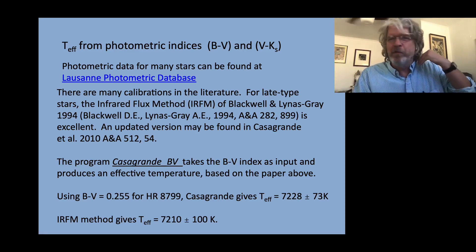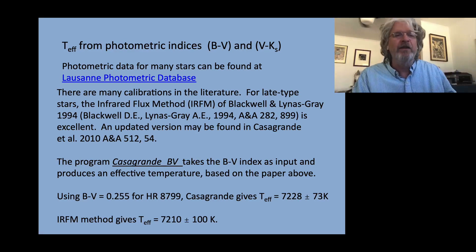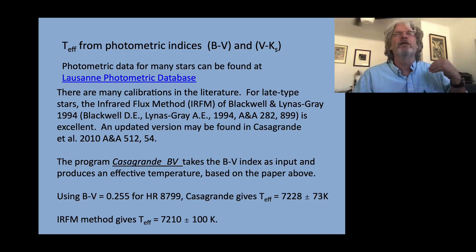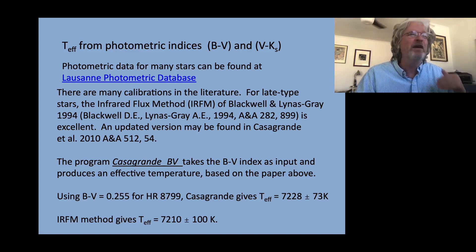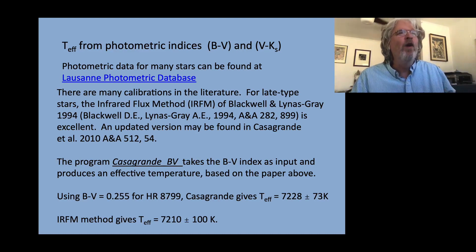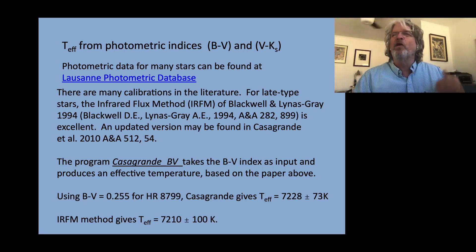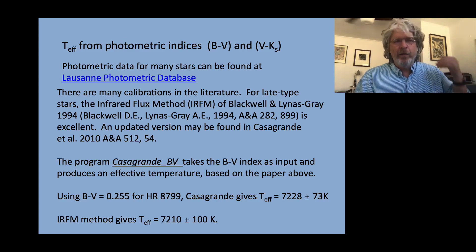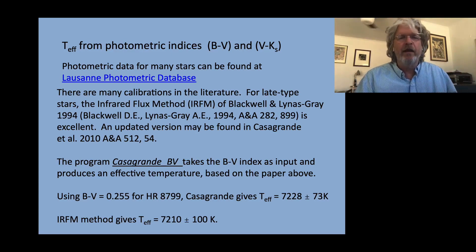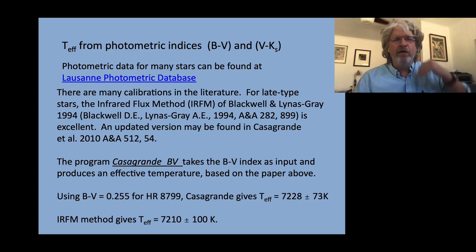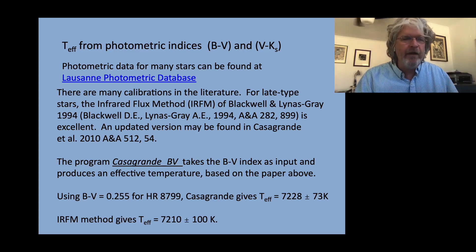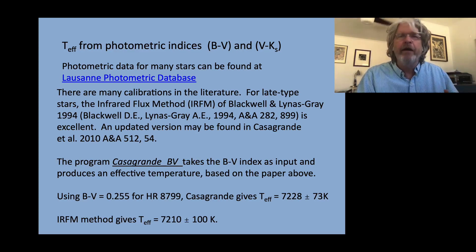Sure enough, people have already done this. The gold standard — probably the best way to do this — is by the infrared flux method. Blackwell was very famous for pioneering this in the 90s. It's what we talked about: you go out and measure the brightness of a star at a whole bunch of different wavelengths and colors, or the biggest wavelength range possible. You want to have ultraviolet measurements, visual measurements, and infrared measurements. Even better if you can get spectra in the visible, ultraviolet, and infrared.